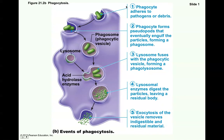These are the steps: the phagocyte adheres to the pathogen, forms a pseudopod around it, and completely contains it to form a phagocytic vesicle or phagosome. Then the lysosome comes over and fuses to the phagosome, becoming a phagolysosome. The lysosome secretes enzymes that break apart the pathogen. The lysosomal enzymes digest the particles, leaving a residual. Then exocytosis occurs where the vesicle travels to the cell membrane of the phagocyte and spits it right out — harmless, because the pathogen is all broken up.